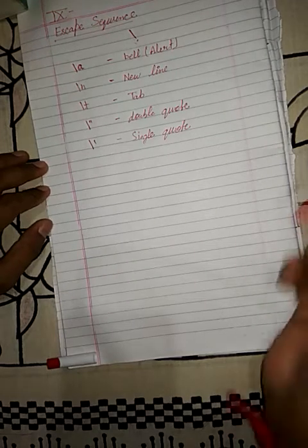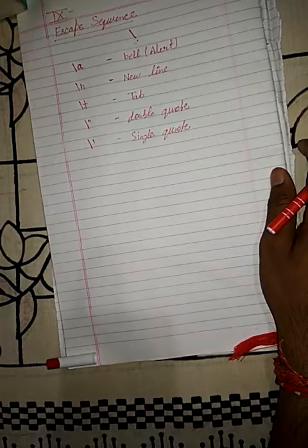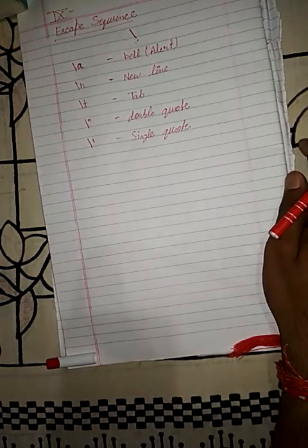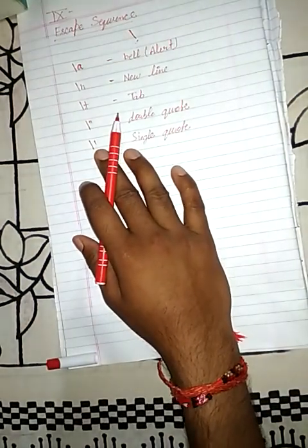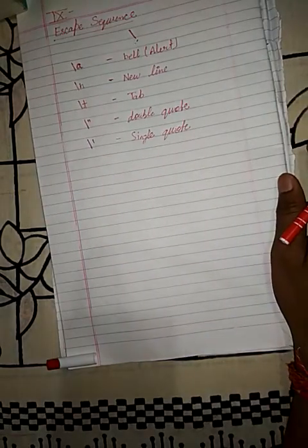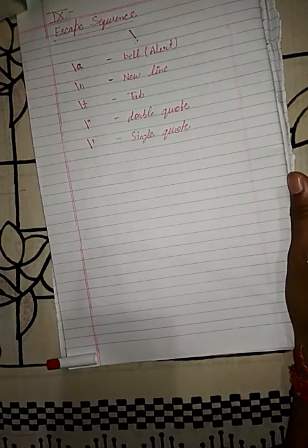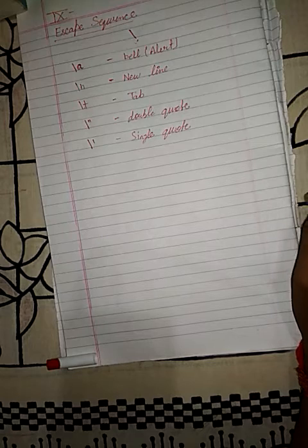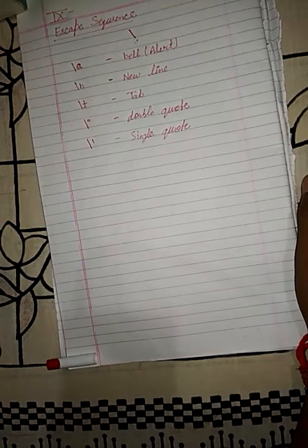Hello class. In the last video I told you about escape sequences, and in this video I am going to tell you about the size and range of the primitive data types. As I have told you earlier about data types — what a data type is and how many types there are — there are basically two types of data types: one is primitive and another is non-primitive.